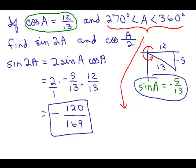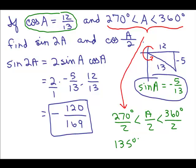I'm going to divide all parts by 2 and that gives me 270 divided by 2 is less than A over 2 is less than 360 degrees over 2. So I have 135 degrees is less than A over 2 is less than 180 degrees and now that tells me what quadrant A over 2 is in.